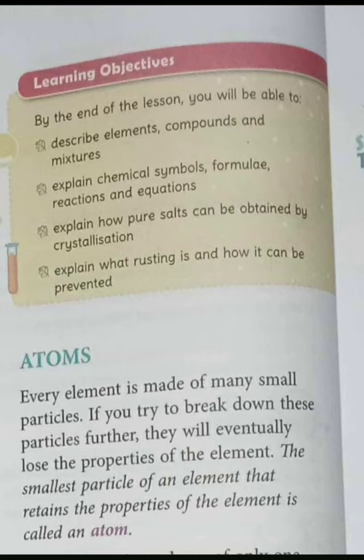After reading this chapter, we will be able to explain different chemical symbols, different chemical formulas, and different chemical reactions and their equations. We will also be able to explain how pure salts can be obtained by crystallization, and explain what is rusting and how it can be prevented.